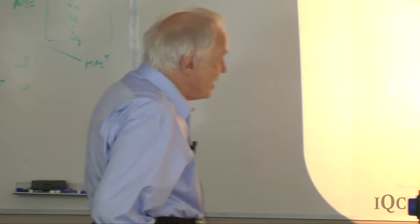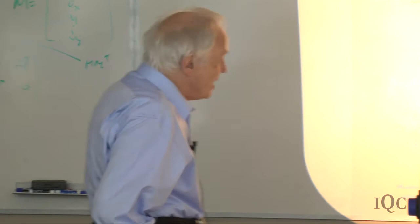One thing implicitly assumed in this argument is that once the system is entangled with the environment, one will not be able to make correlated measurements on both system and environment—that is, measurements of the form ω₁ × ω₂ where ω₂ as well as ω₁ is non-trivial.